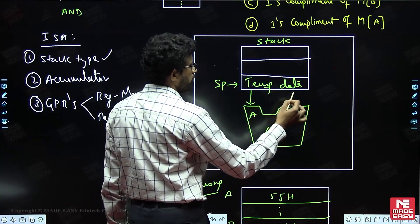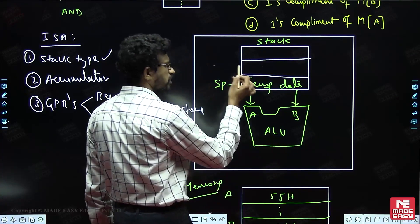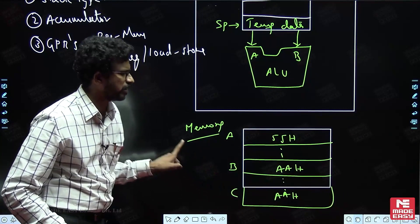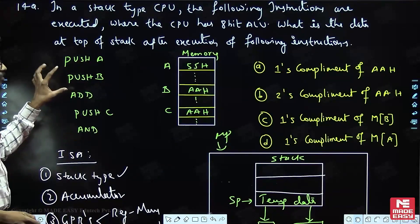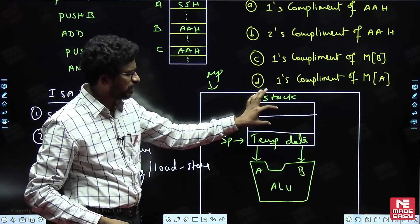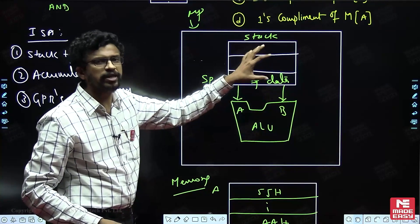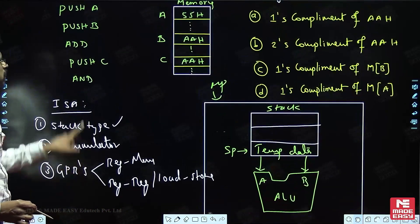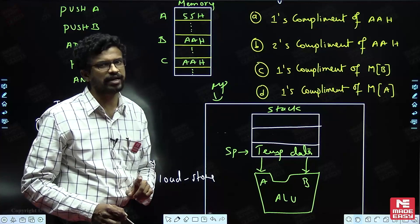The stack pointer points to the latest temporary data in memory. The two inputs of the ALU come from the top of the stack only. Two bytes are brought from the stack, and after the operation, the result is stored back at the top of the stack. In the stack type, you cannot bring data directly from memory into the ALU — it must first go into the stack.